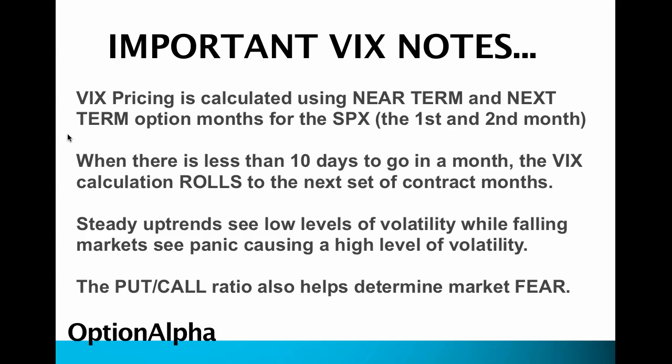When you see steady uptrends, you're going to definitely see low levels of volatility because markets are generally just trending and rising. And when the markets are falling, you see panic, which causes a high level of volatility. It means that option traders are buying more protection. As you start to see the market falling, more panic investors and option buyers start coming in and buying up puts to protect their portfolios, which increases implied volatility levels across the board.